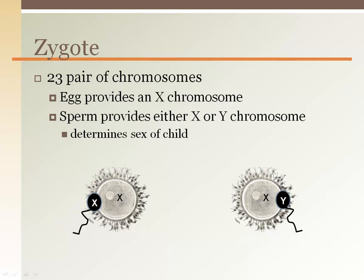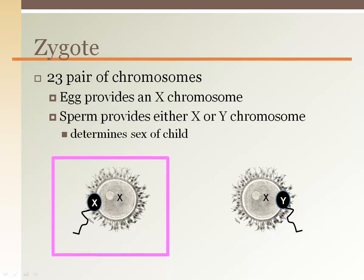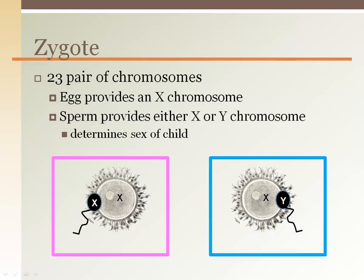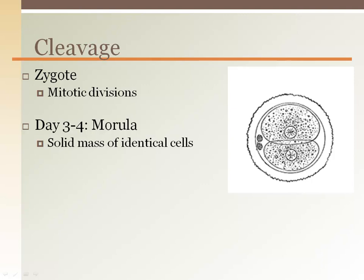A zygote with an X chromosome from the mother and an X chromosome from the father, or XX, is a girl. A zygote with a Y chromosome from the father, or XY, is a boy. Once the egg and sperm combine, the cell becomes a zygote.